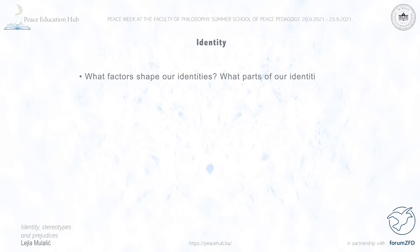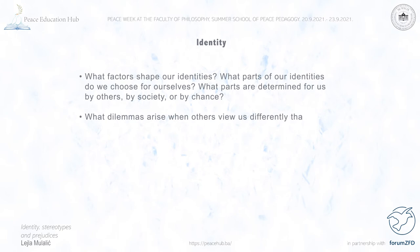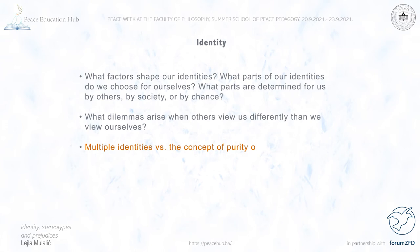What is identity? What is it that shapes our identity? Which parts are we given upon birth? Which parts can change throughout time? Which parts are determined by our experience? And what happens when people perceive us differently than we would like to be perceived? Finally, I would like you to think about the distinction between multiple identities and the concept of purity of identity, or what I will come to call a single story of oneself.